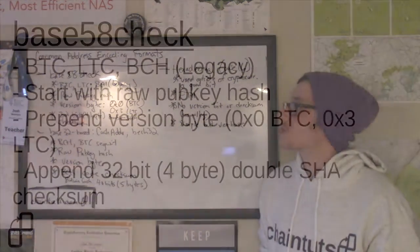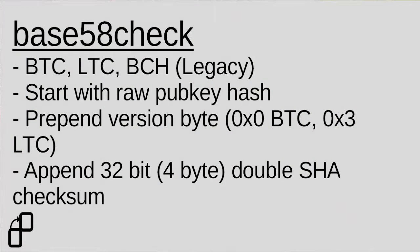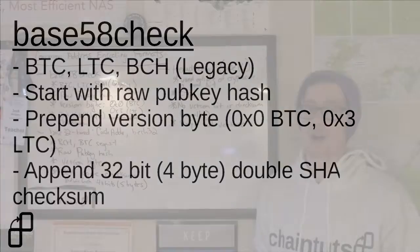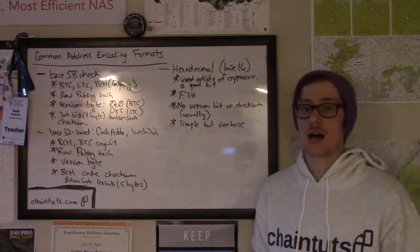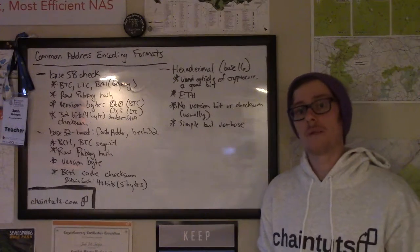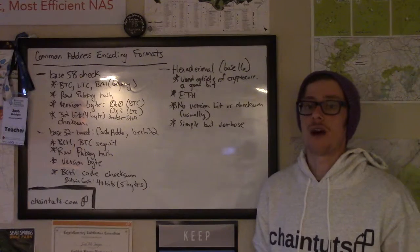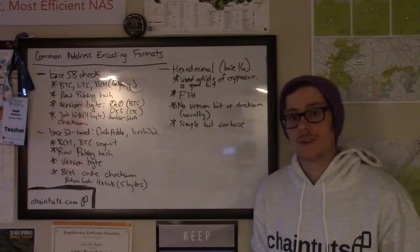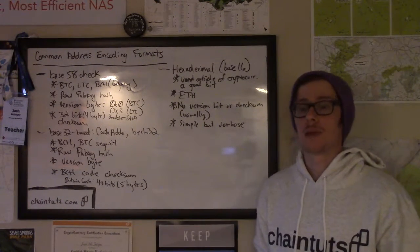Base58 encoding starts out with a raw public key hash. When you create an address in Bitcoin, you don't just use the raw public key that is derived from your private key that unlocks your funds. First, the raw public key is actually run through a double hashing algorithm — it's run through SHA-256 and then RIPEMD-160 to give us a final 160-bit or 20-byte public key hash.